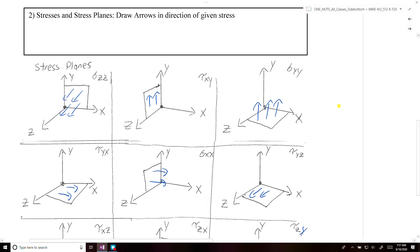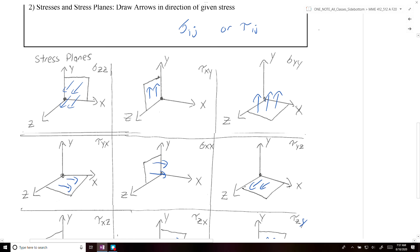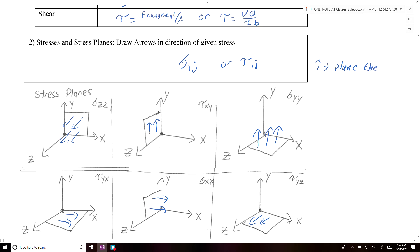So then we have stresses and stress planes. So the key to this exercise is that the first index, so if you had sigma ij or tau ij, the first index is the plane, is the direction that is normal to the plane.